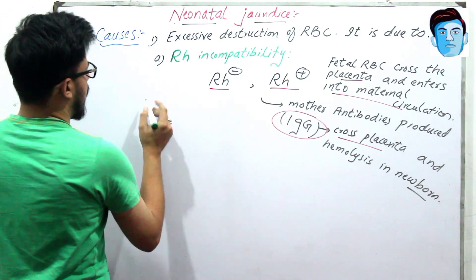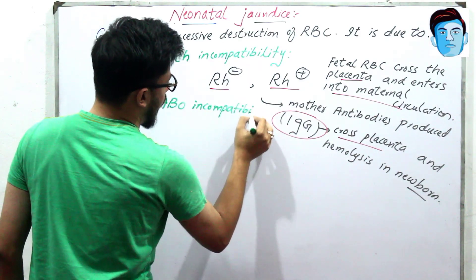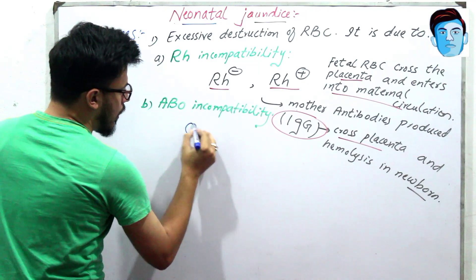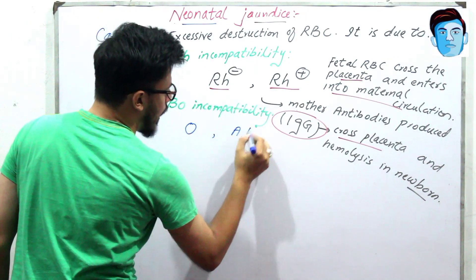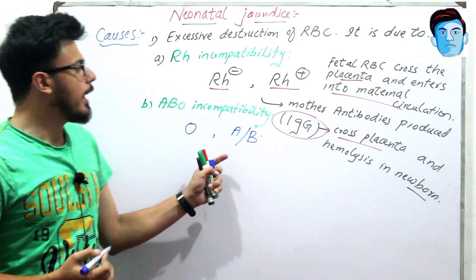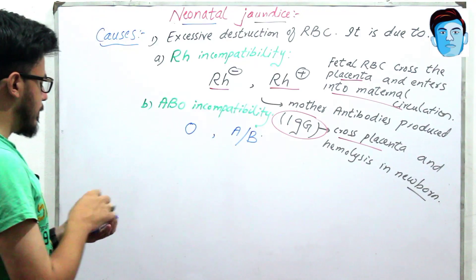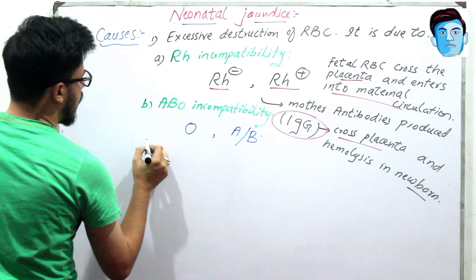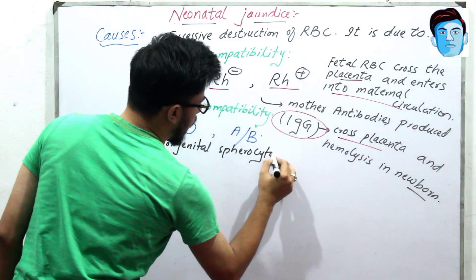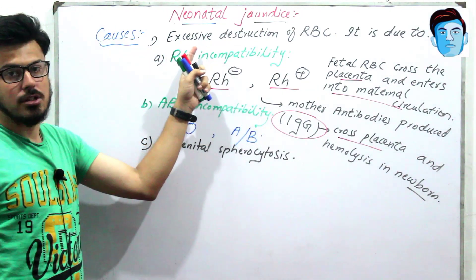There is another incompatibility called ABO incompatibility. In ABO incompatibility, the mother's blood group is O while the fetus's blood group is A or B. Similarly, here the maternal antibodies are mounted against the fetal RBC and cause destruction and hemolysis in the newborn. There is also congenital spherocytosis which also leads to excess RBC destruction. This is the major and main cause of pathological jaundice.